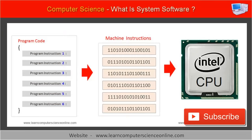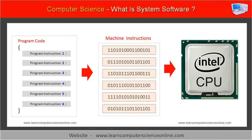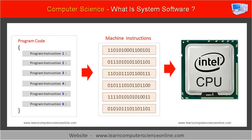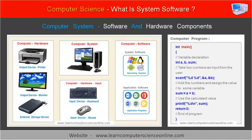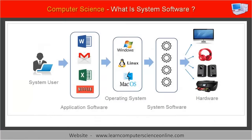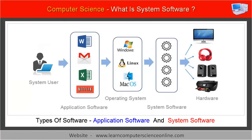In other words, the software is an essential component of every computer system. So far we have discussed what is software and why do we need software. Let us now understand the different types of software used in the computer system.